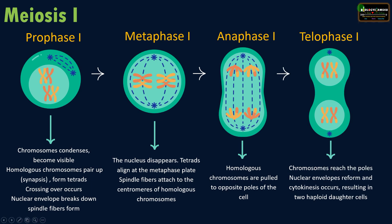The final stage of meiosis one is telophase one. During telophase one, chromosomes reach the poles, the nuclear envelope reforms, and division of cytoplasm — cytokinesis — occurs, resulting in the formation of two haploid daughter cells from a diploid parent cell. That is why meiosis one is called reduction division: the chromosome number is reduced to half in this division.